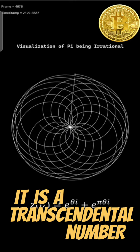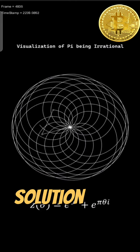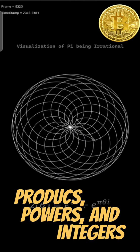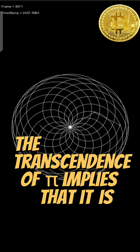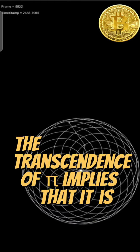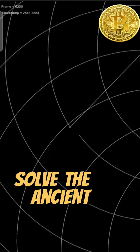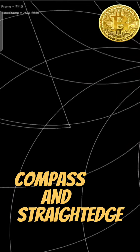It is a transcendental number, meaning that it cannot be a solution of an equation involving only finite sums, products, powers, and integers. The transcendence of pi implies that it is impossible to solve the ancient challenge of squaring the circle with a compass and straightedge.